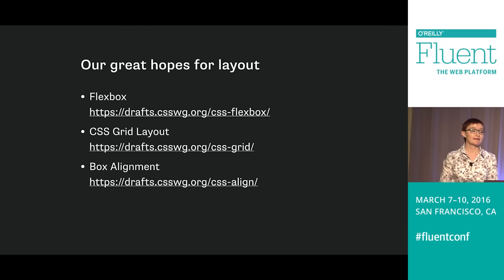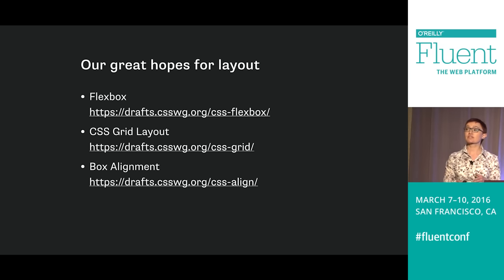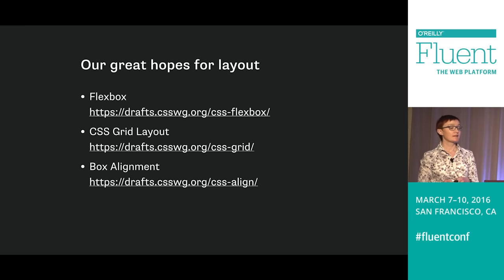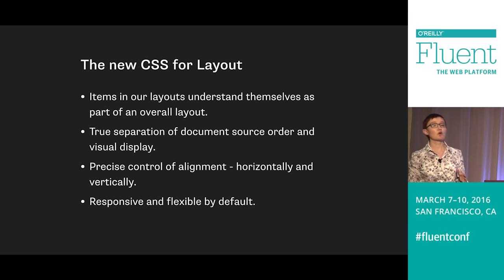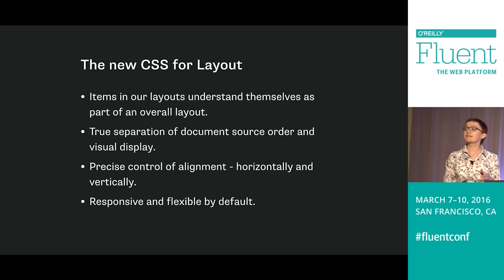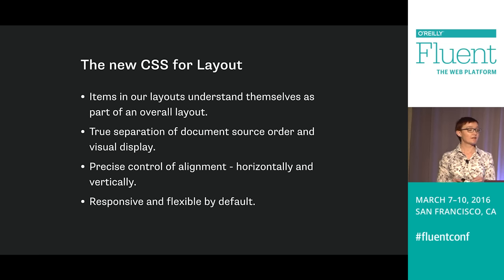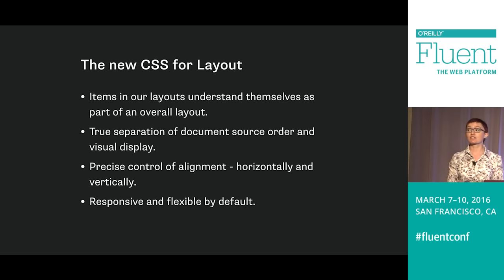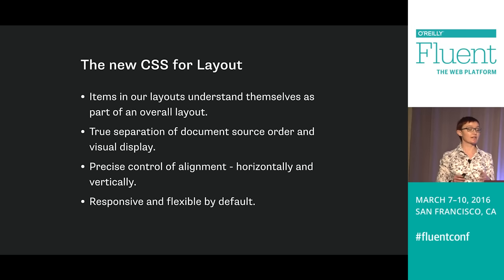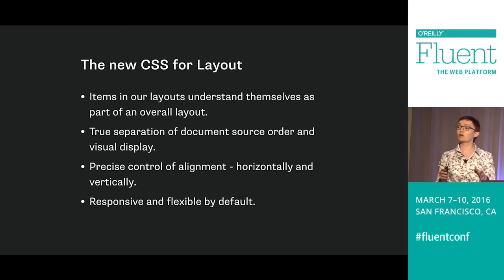But there is hope. And it comes in the form of a group of modules that are going to redefine how we do layout on the web. These are Flexbox, CSS Grid Layout, and the Box Alignment module. These are our new system for doing layout on the web. When we talk about these new modules, they share some characteristics that our existing layout methods do not have. They properly separate document source order and visual display. They give us true alignment control. They give us the ability to center things horizontally and vertically. They're responsive by default. They remove the need to calculate percentages to make columns fit.